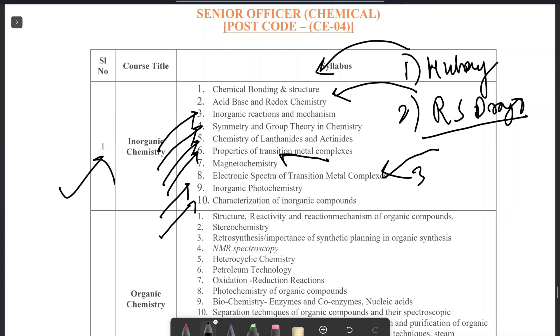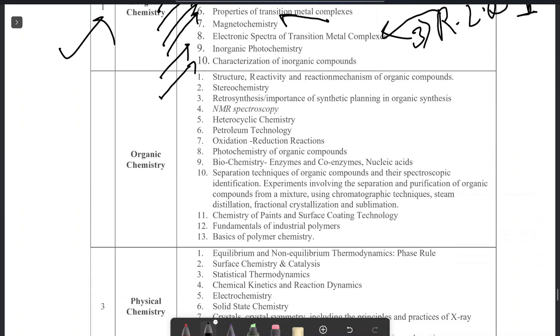Next is for organometallic compounds, you can read Organometallics by A.H. Elias, Anil Jacob Elias. There is one book, R.L. Datta, volume 1. This is a very good book. You can read chemical bonding, acid-base, redox chemistry, magnetic chemistry from this book. Brief description is there, very good book.